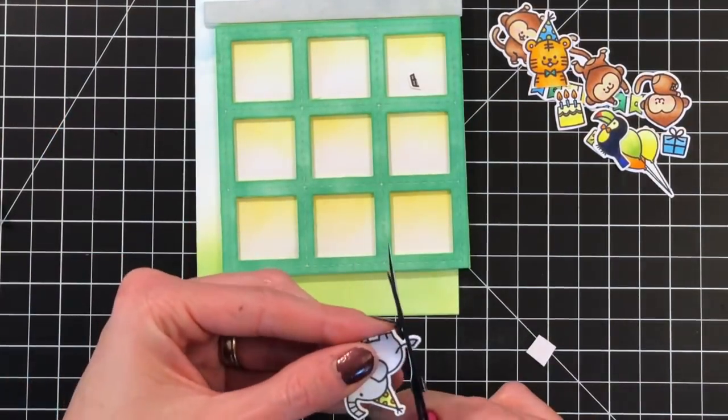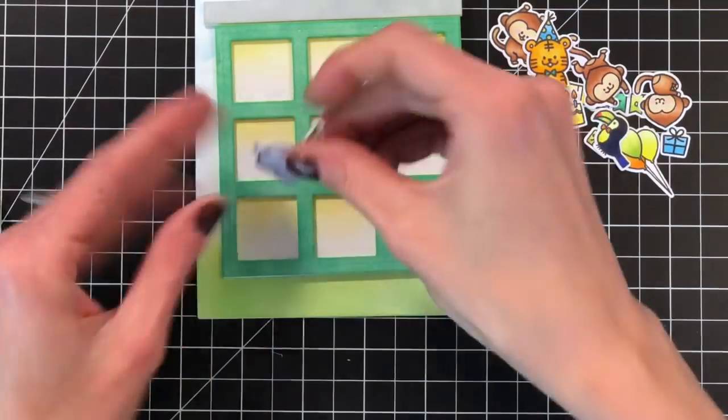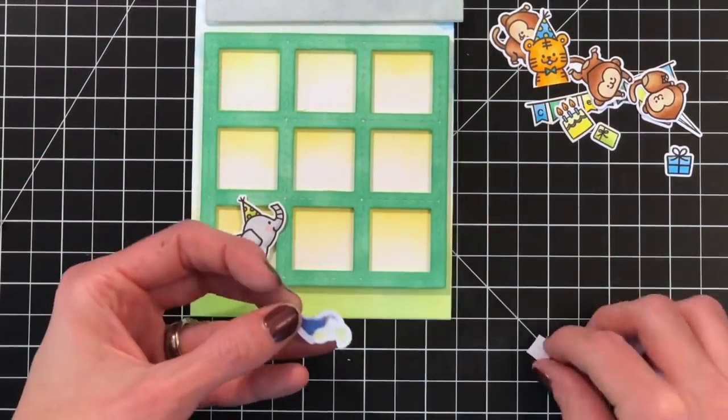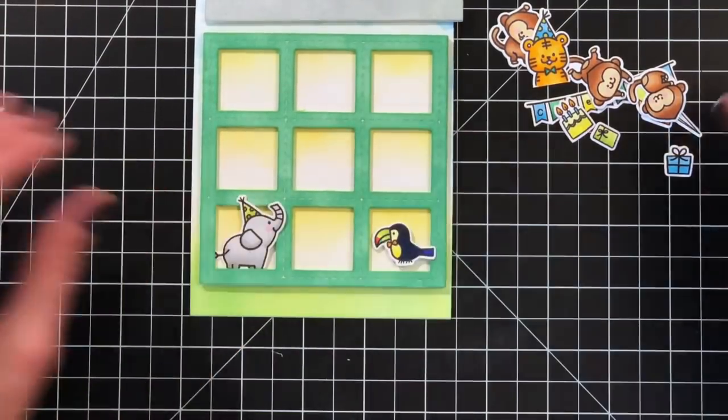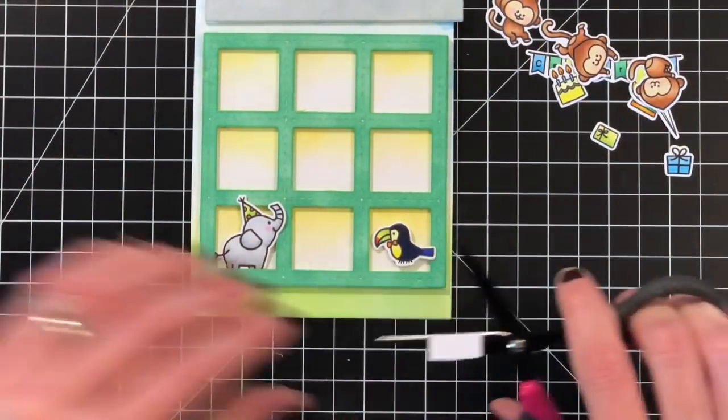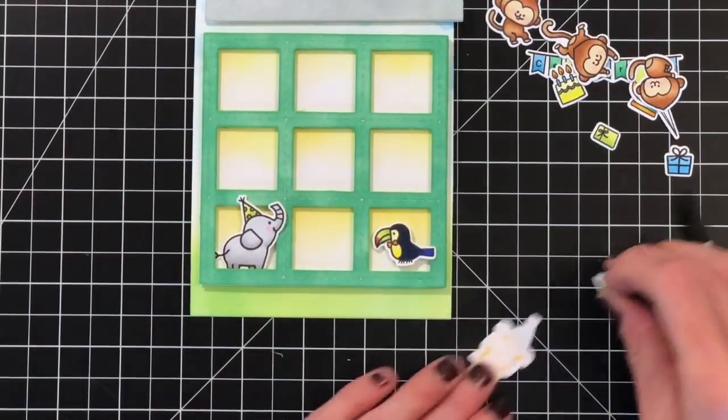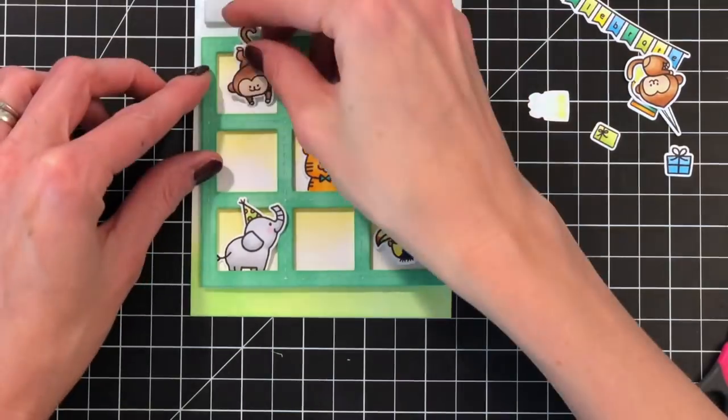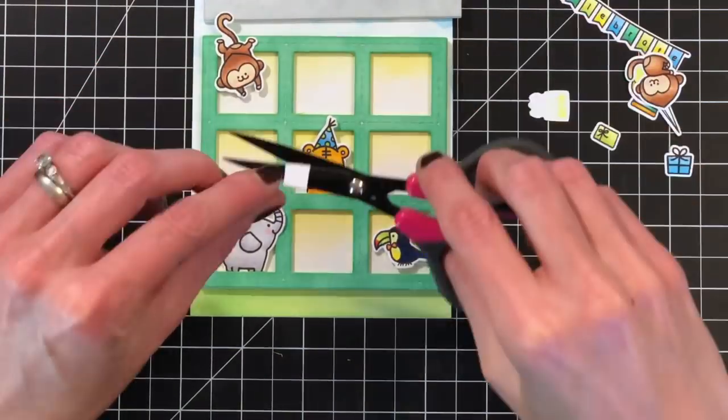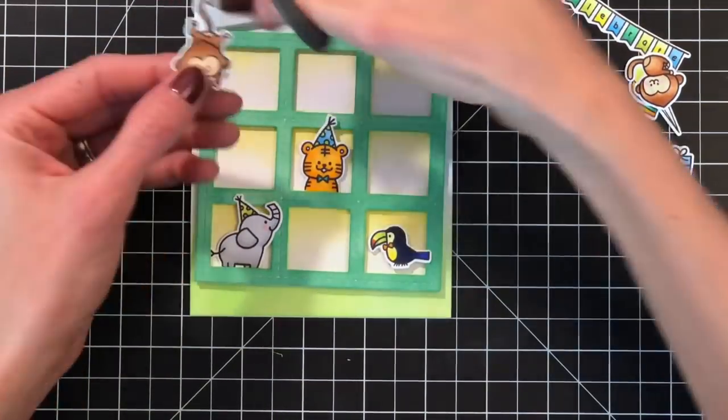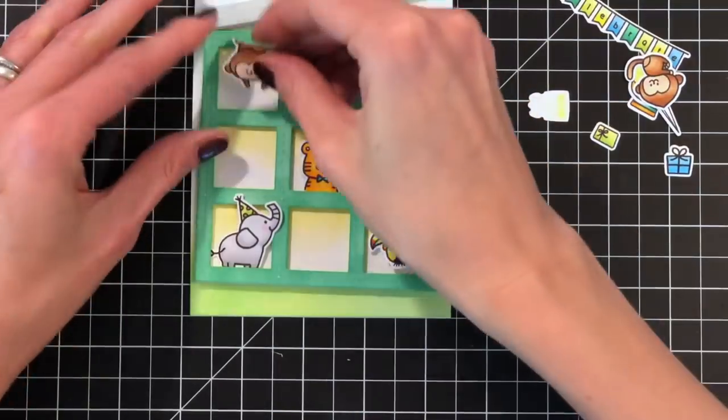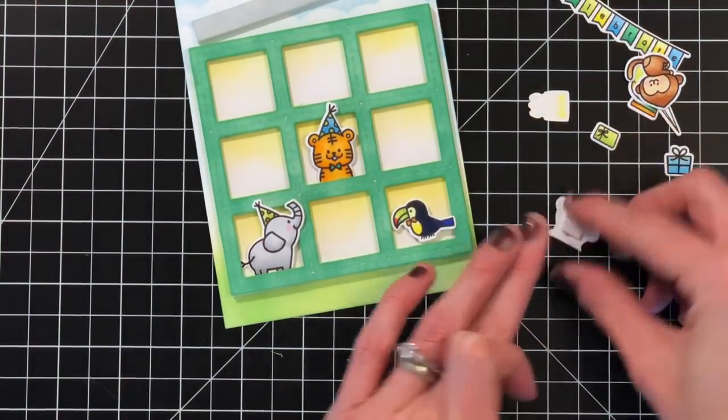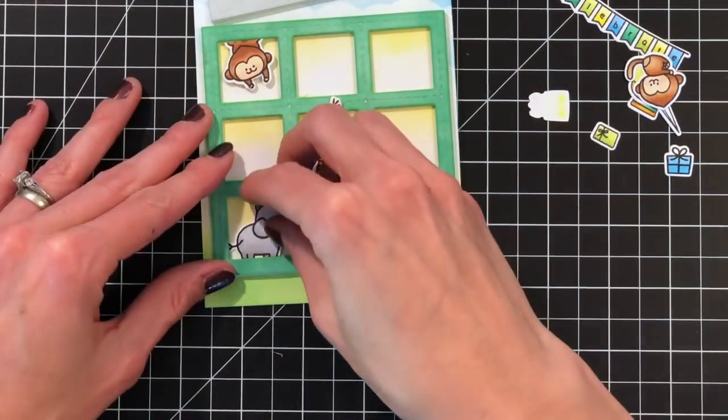And I did have to trim down a couple. I trimmed down the elephant and one of the monkeys so they fit inside the frames. So I just trimmed his legs and a little bit of his tail so he would fit. I'm going to leave the bird, let part of him hang out. And the tiger girl is right in the middle. That monkey right there, he will get trimmed down and so he appears to be inside the apartment. And give him a little foam tape.